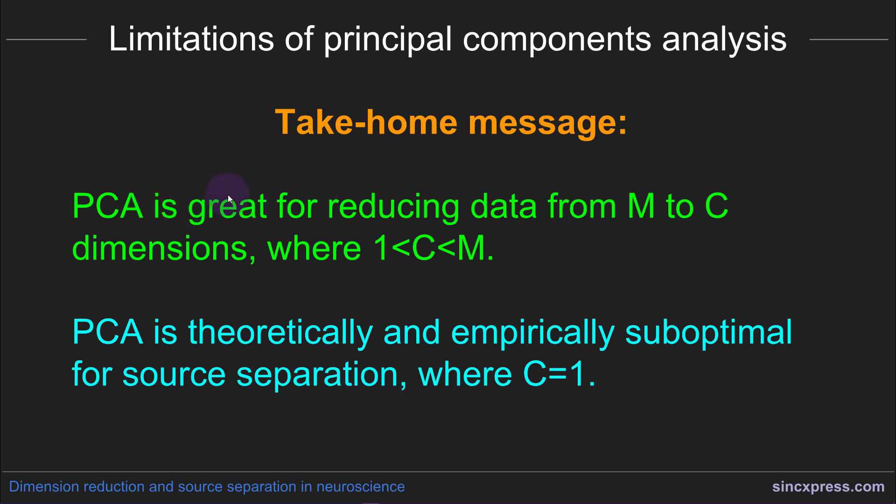One thing that PCA is good at is determining the practical dimensionality of the data, and this is different from the rank of the data. PCA will tell you how many important dimensions of information are contained in the data matrix, whereas the rank of the matrix will just tell you the number of linearly independent columns. For example, you could add noise to data and you would get full rank, but you wouldn't really increase the number of principal components.